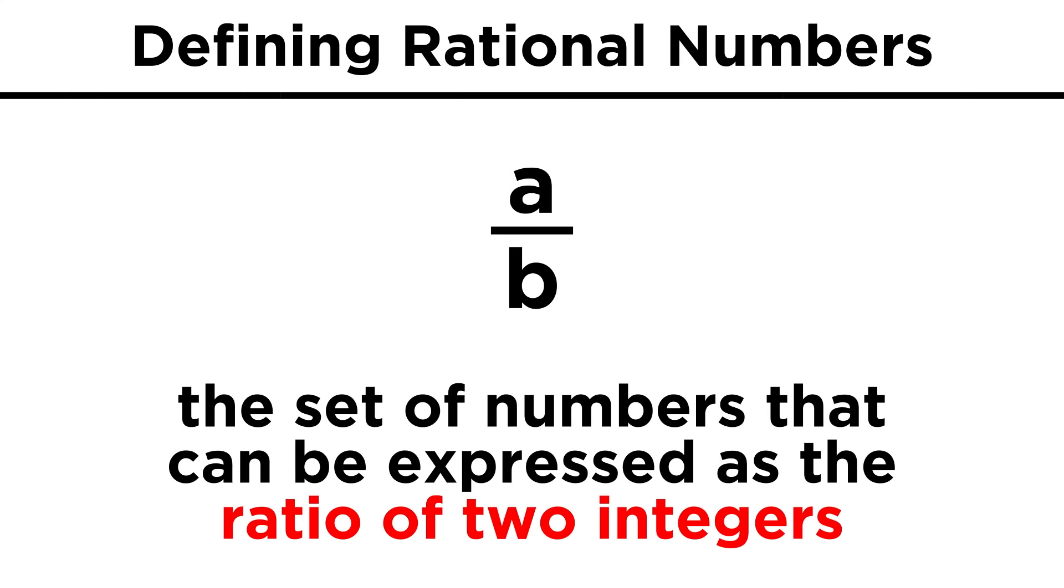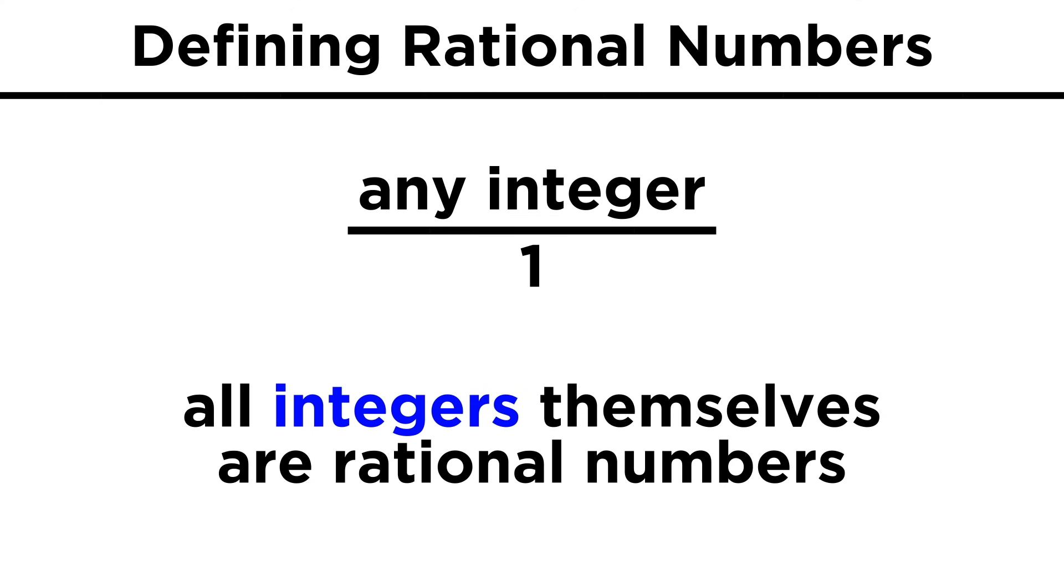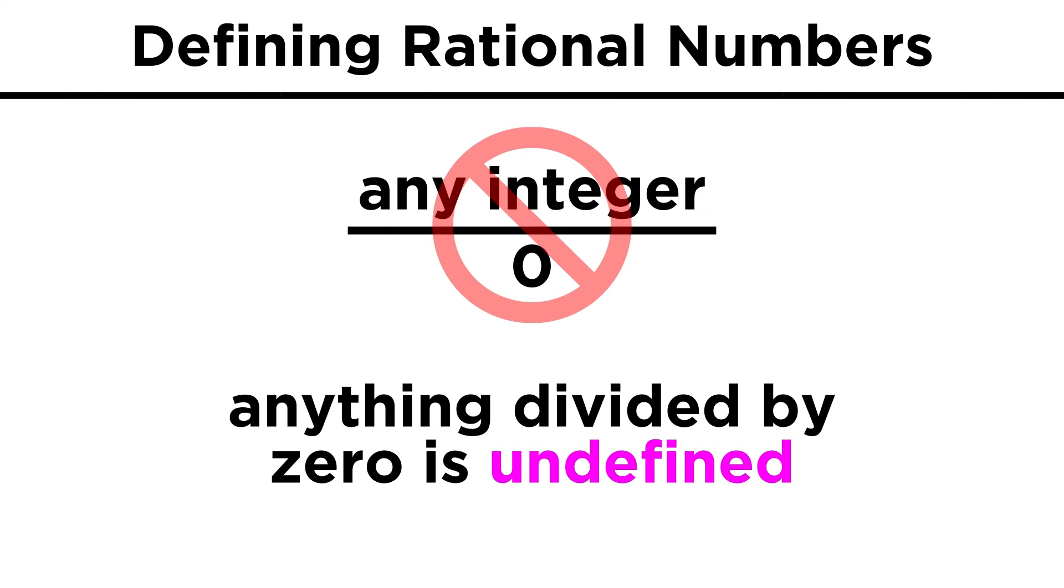Rational numbers are defined as any number that can be expressed as the ratio of two integers. Three halves, ninety-three six hundred and fourths, you just make a fraction, put any integer on top and any integer on the bottom, and you've got a rational number. The number on the bottom can also be one, so all the integers themselves qualify as rational numbers. The only number that can't go on the bottom is zero, as that will yield a value that is undefined.